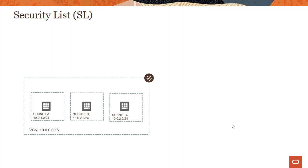In the previous modules we have already looked at security list when we were running a few demos. We went through these and opened certain ports for some of the subnets and instances, but let's look into this in more detail. I have a VCN with a 10.0.0.0/16 address space and three subnets. These can be regional or, if you are in a multi-AD region, specific to ADs.